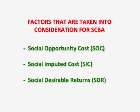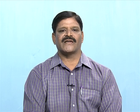Factors taken into consideration while implementing social cost benefit analysis include: social opportunity cost, which indicates what would have been the best opportunities if the same resources were not used for this project and how it would have helped society. Similarly, social imputed cost — what is the value attributed to this project or how much it would cost to society; that is known as social imputed cost.